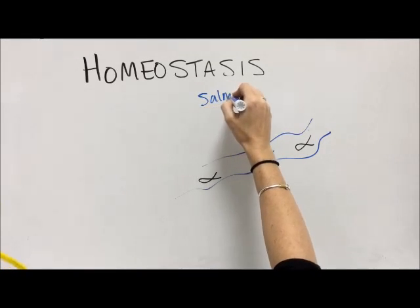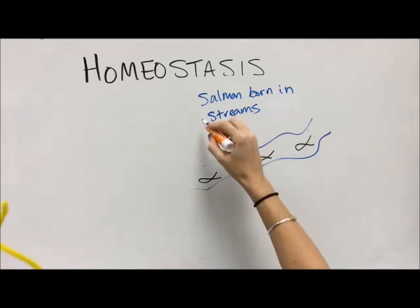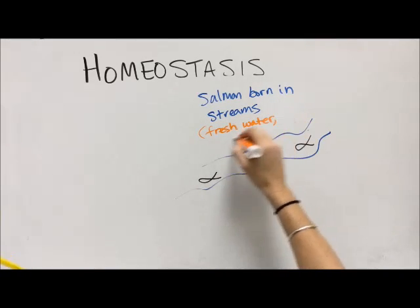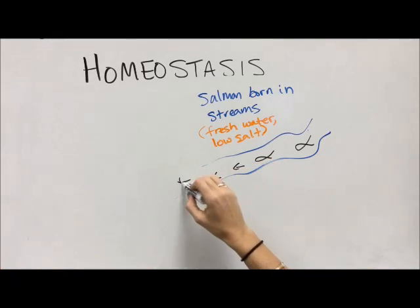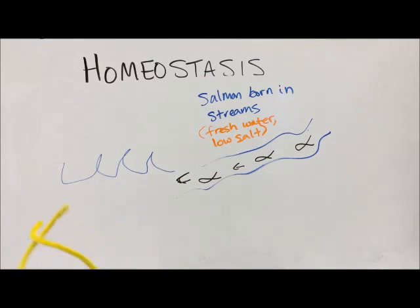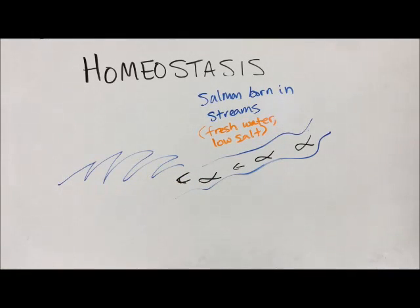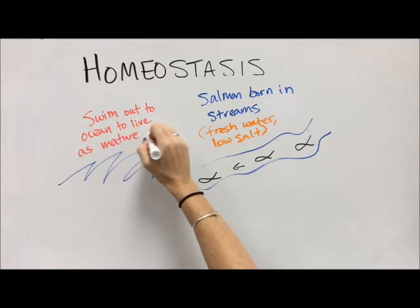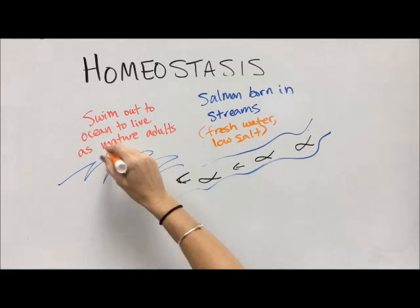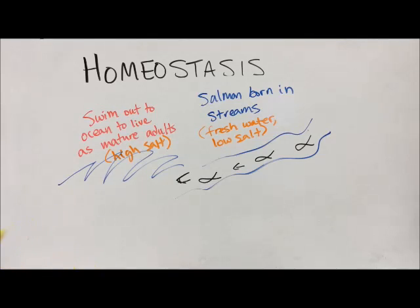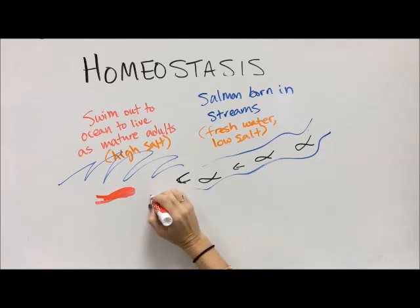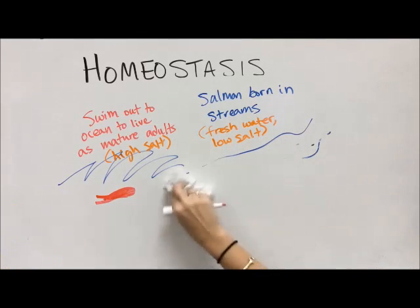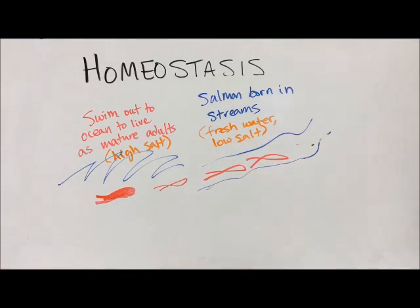Salmon are born in streams, which are fresh water and therefore have very low salt content. The salmon then travel down the stream into the ocean, where they spend most of their mature adult life. The ocean has a very high salt concentration, and salmon are one of the few creatures that can handle this salt-to-fresh-water scenario because the cells of their bodies are able to deal with the change in salt concentration.